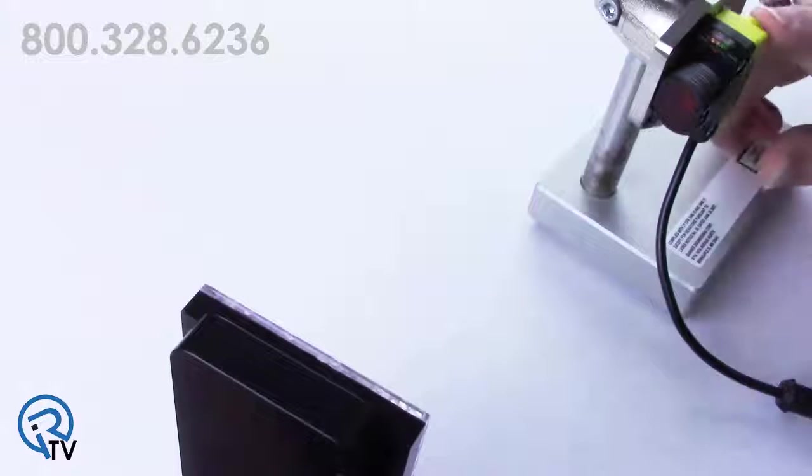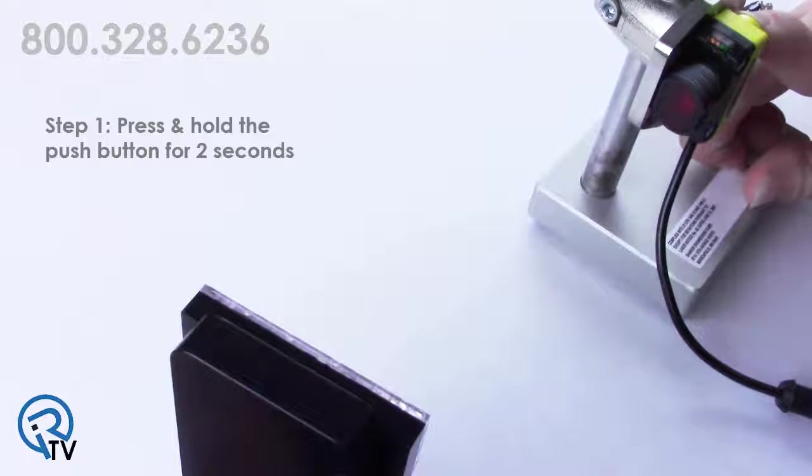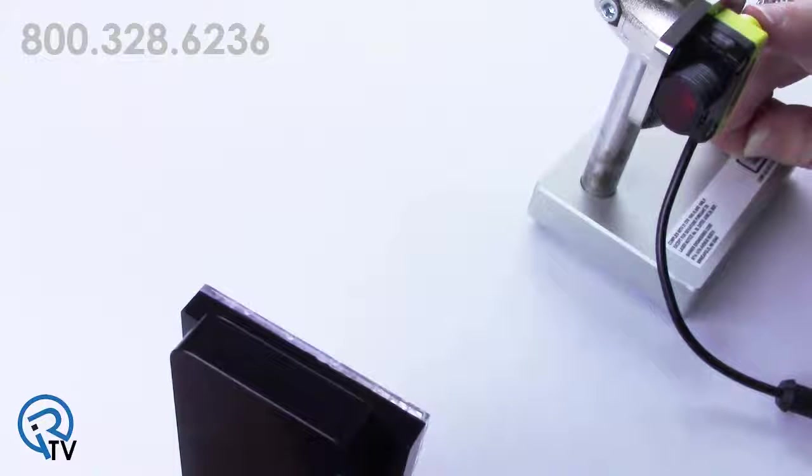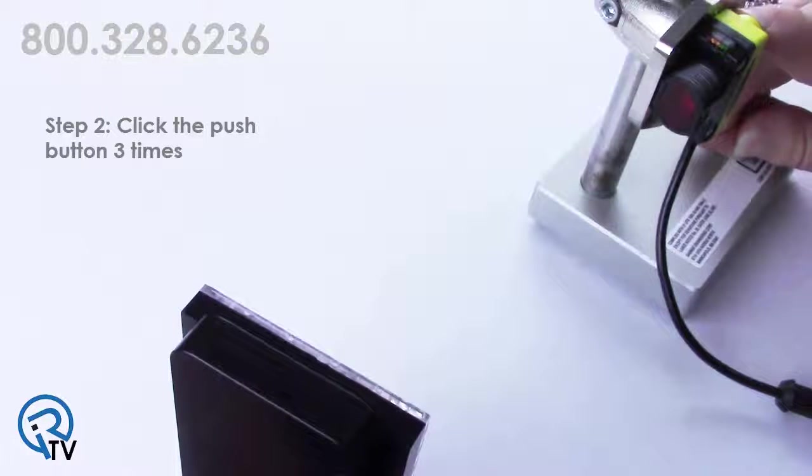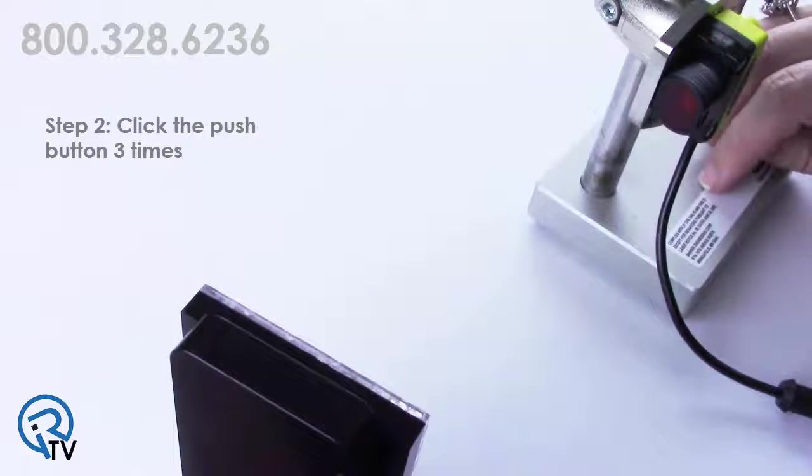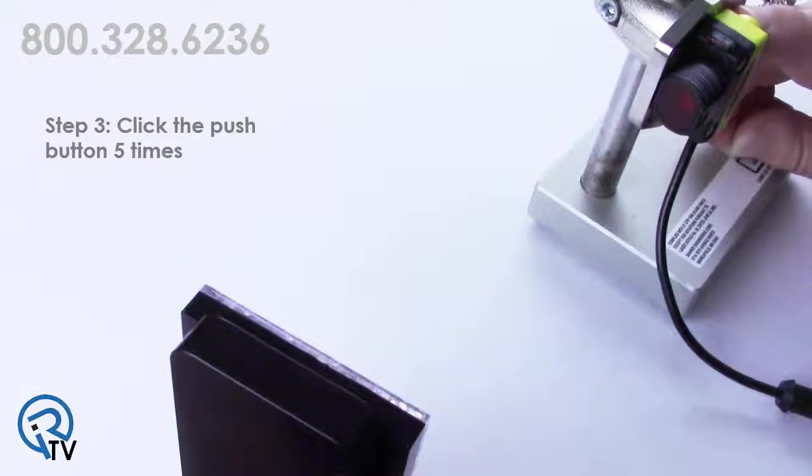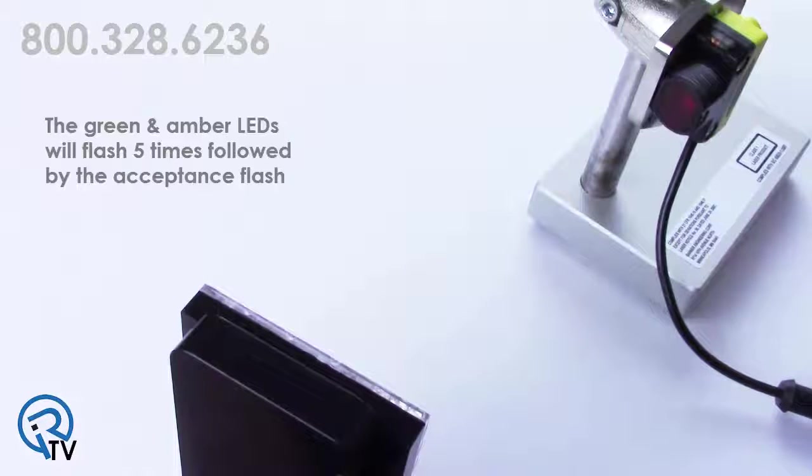To enable the 30 millisecond off delay, press and hold the push button for two seconds. Click the button three times to enter the advanced menu. Click the button five times to enable the off delay. The green and amber LEDs will flash five times followed by the acceptance flash.